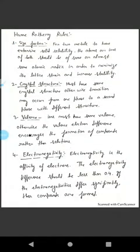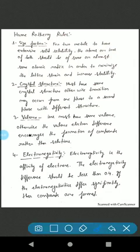Now come to the next page. This is the Hume-Rothery rules. What rules have Hume-Rothery established? Number one is the size factor. For two metals to have extensive solid solubility, the atoms or ions of both should be of same or almost same atomic radius in order to minimize the lattice strain and increase stability.